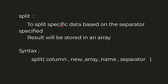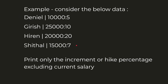The split command is used to split data based on a separator specified in the command, and the result is stored in an array which we can access using an index. The syntax is: split followed by the column number whose data we want to split, then the new array name where the split data will be stored, and then the separator — which specifies how the data in that column is separated.